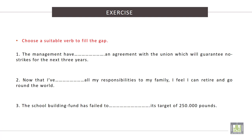Exercise. Choose a suitable verb to fill the gap. 1. The management have reached an agreement with the union, which will guarantee no strikes for the next three years. The best verb could be 'reached' or 'secured'. So we secure or reach an agreement.